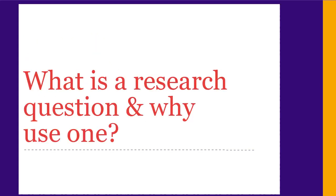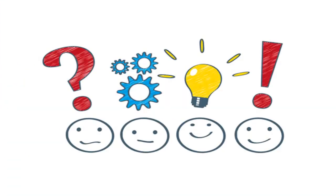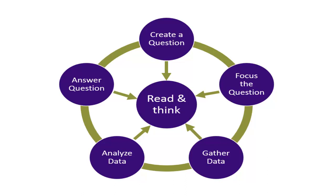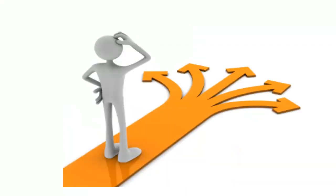First, let's talk about what research questions are and why they're used. Academic research is a process of inquiry, or of asking and answering questions. Research questions form the foundation of this process. Basically, you decide on a question you want to research, then focus and test the question. After you're happy with it, you gather the information you need to answer the question, then analyze it to come up with an answer. A research question also helps with one of the most common problems in the research process: staying on track. Your question helps by defining and focusing your project to keep you on course and avoid tangents.